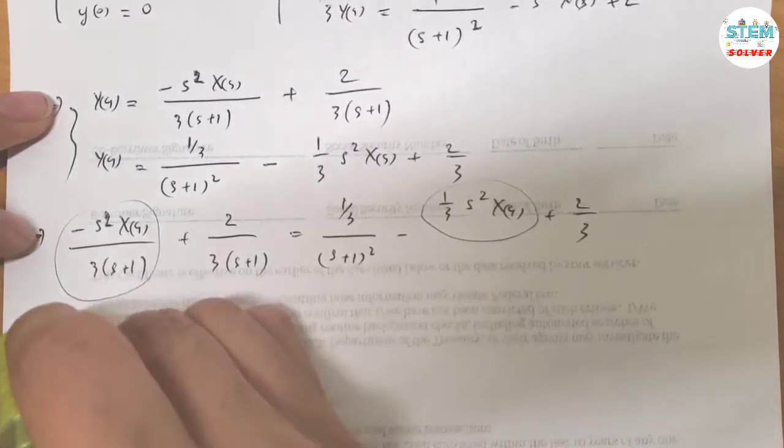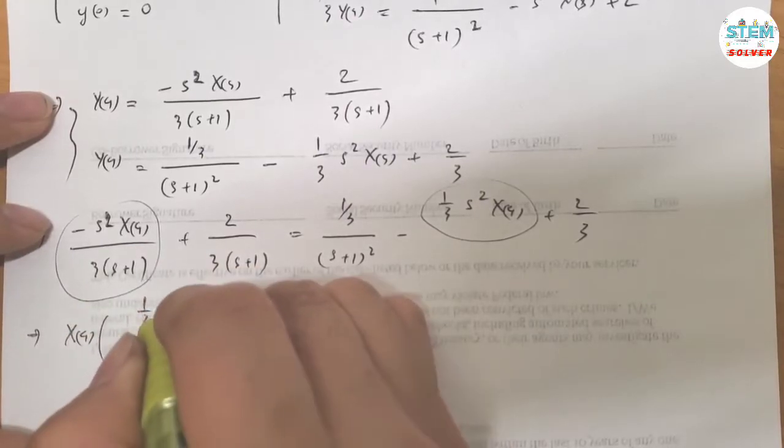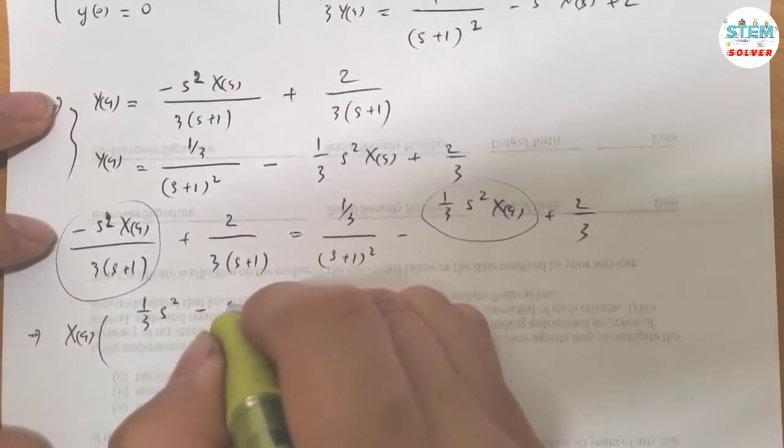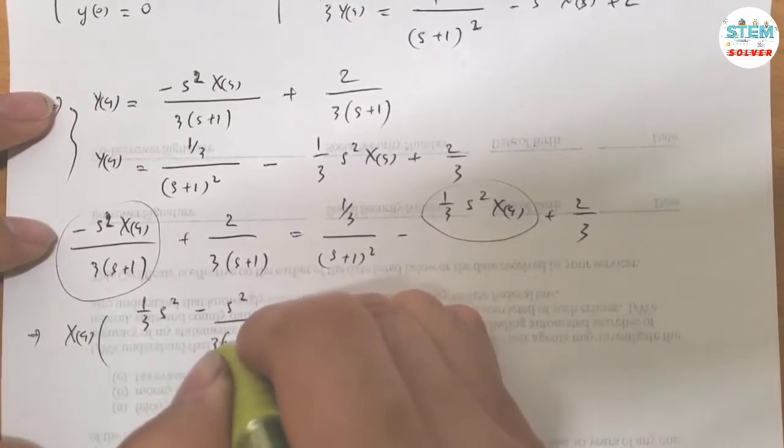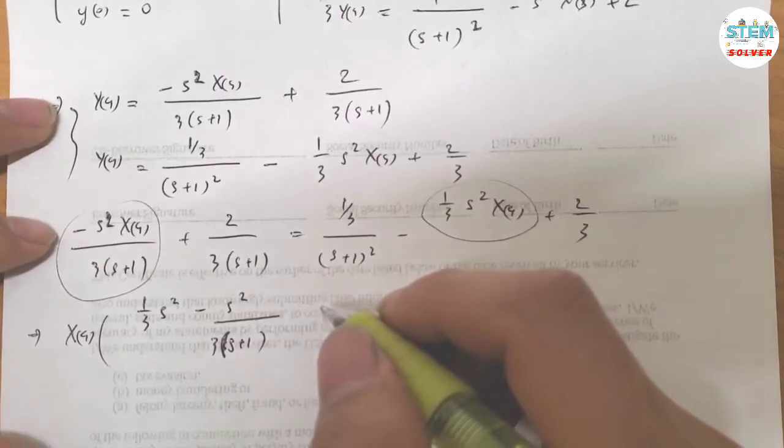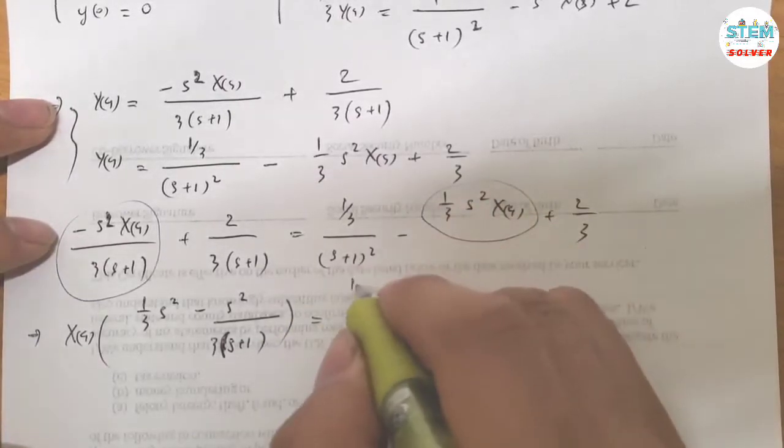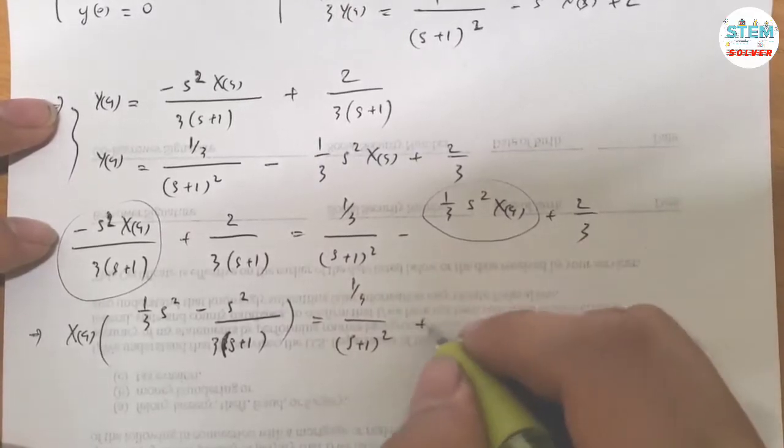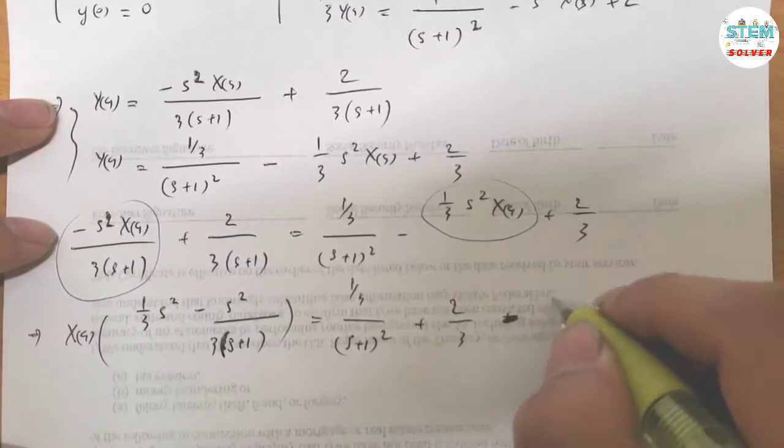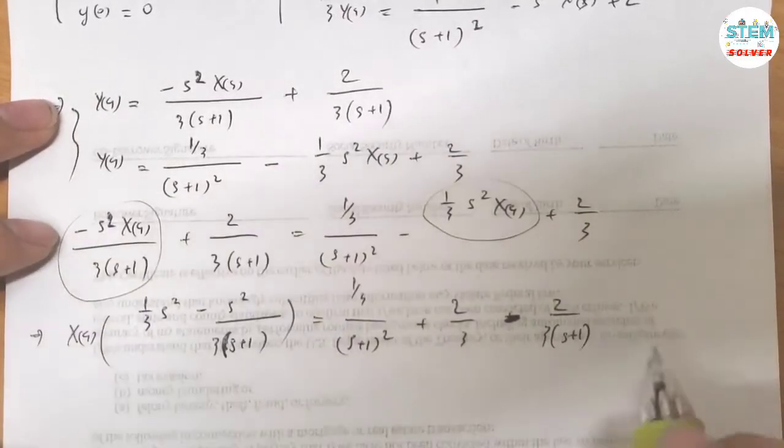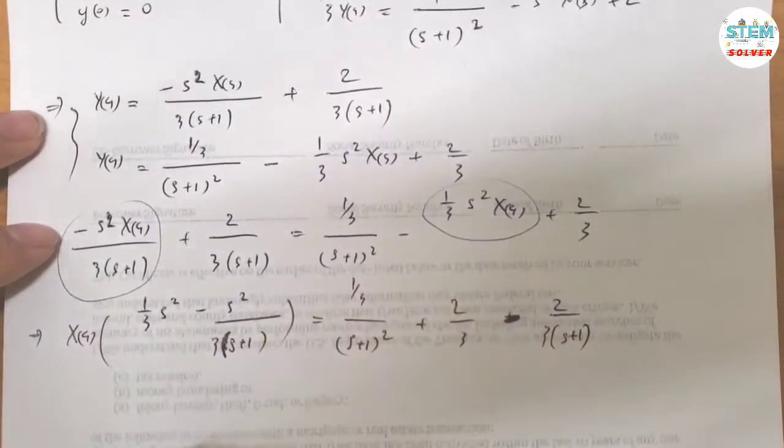Write this one. So move this to the left side I have this one. Equals, just rewrite this. And move this to the right side. Minus 2 over 3 S plus 1. Now the LCD is 3 times S plus 1. So multiply by that LCD.